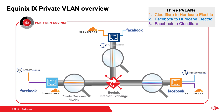Equinix IX Private VLAN Overview. Here we have a logical diagram showing how all three separate PVLANs could be configured. You'll see all three customers — CloudFlare, Facebook, and Hurricane Electric — all have ports on our Equinix Internet Exchange platform. But instead of one shared public VLAN, there are three separate private VLANs going from CloudFlare to Hurricane Electric, Facebook to Hurricane Electric, and Facebook to CloudFlare, giving a private connection between each participant.